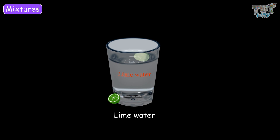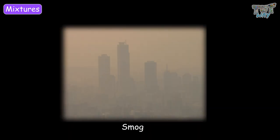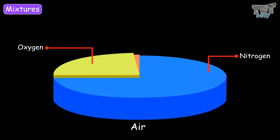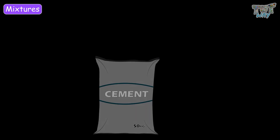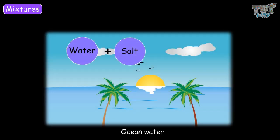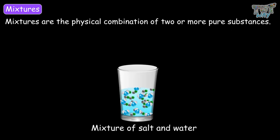Other common mixtures are smog, which is a mixture of smoke and fog. Air is also a mixture of oxygen, nitrogen, carbon dioxide, and many other gases. Cement is a mixture of sand, water, and gravel. Ocean water is a mix of water, salt, and many other kinds of minerals. These were the examples of mixtures. So now we know mixtures are the physical combination of two or more pure substances.